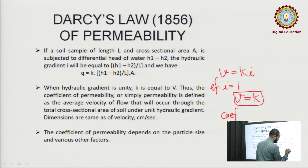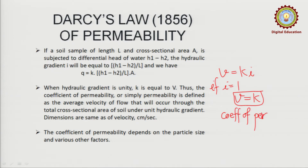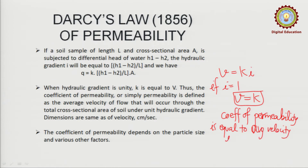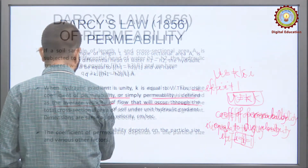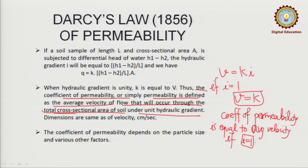So the coefficient of permeability may be defined as the average velocity of flow that will occur through the soil under unit hydraulic gradient. The unit for this will be centimeter per second or meter per second — same as that of velocity. The coefficient of permeability depends upon particle size and various other factors, which we will study later.